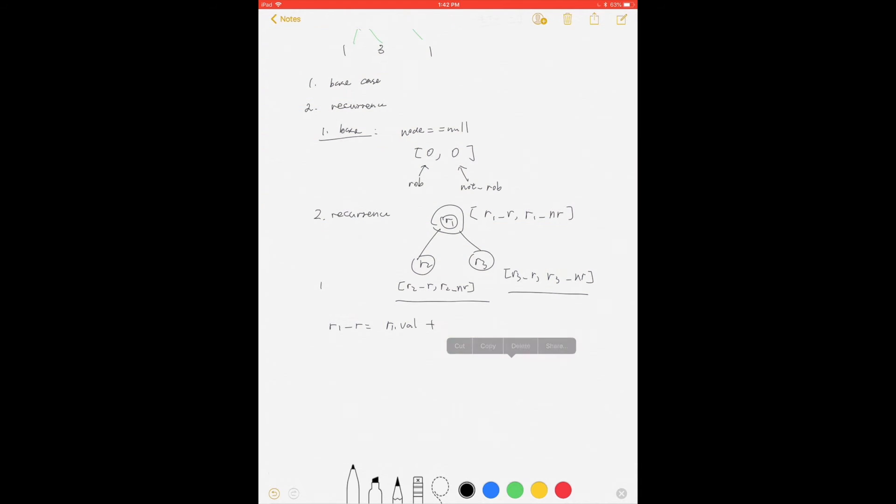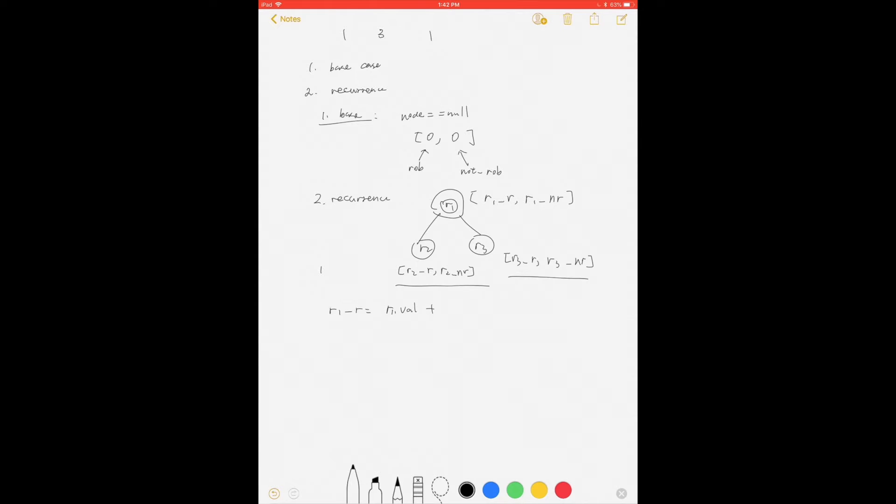Then it's going to be r1.value plus something. Since we rob r1, it implies we could not rob r2 or r3. So it will be the sum of r1.value + r2_nr + r3_nr. I hope that makes sense.